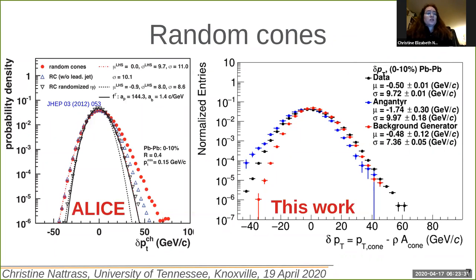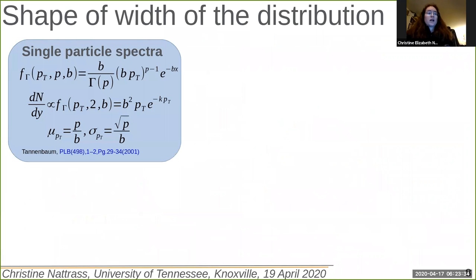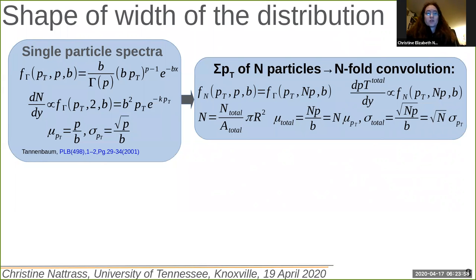You can take these distributions and fit them to get the width. This problem was already solved for ET distributions in events. In a paper by Mike Cannonbaum, you can approximate the single particle spectrum as a gamma distribution. When you add up N different particles randomly selected from that gamma distribution, you get another gamma distribution. The average width of the distribution is the square root of the number of particles times the width in the single particle distribution.